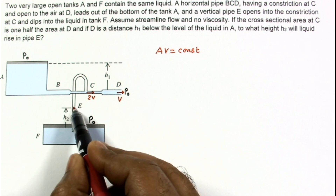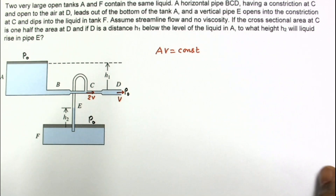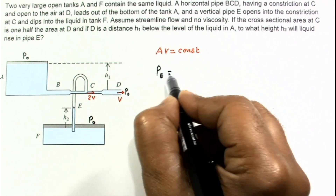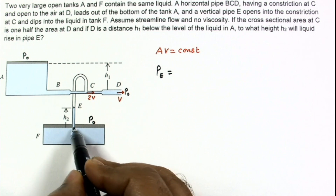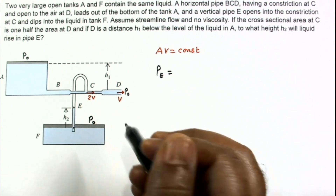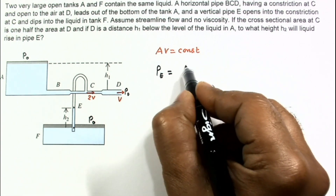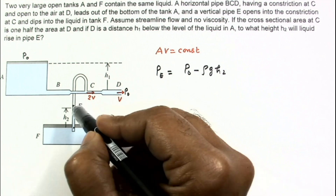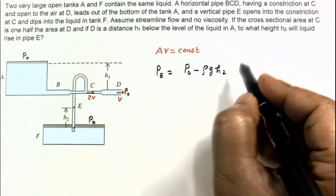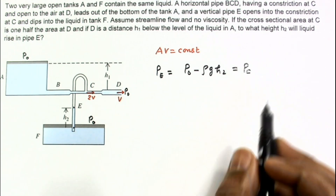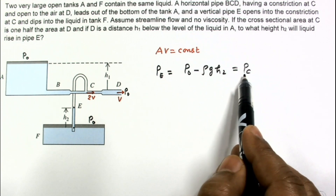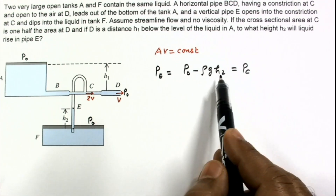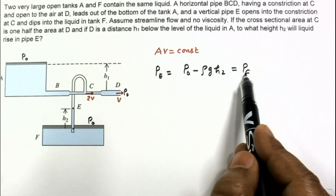Now for calculation, we find the pressure at point E. Taking the liquid surface in tank F as reference, if s₂ is the height to which liquid rises in pipe E, then the pressure at E can be written as P_E = P₀ − ρg·s₂. Since there is air from E to C, this is also the pressure at point C. We now need to calculate the pressure at C in terms of h₁ and equate the two expressions to find s₂.